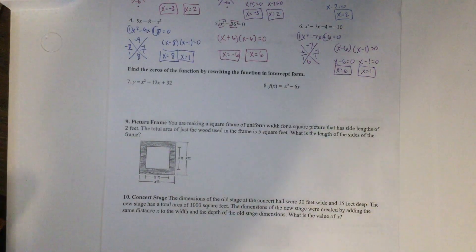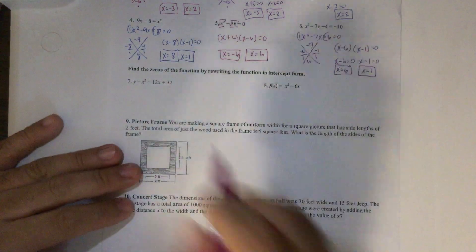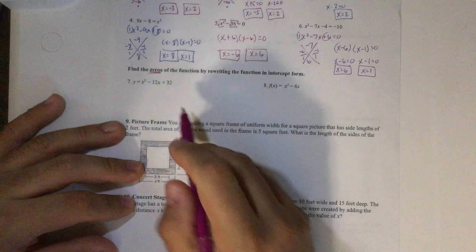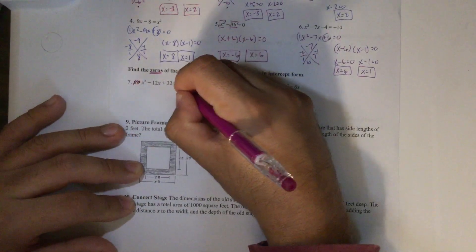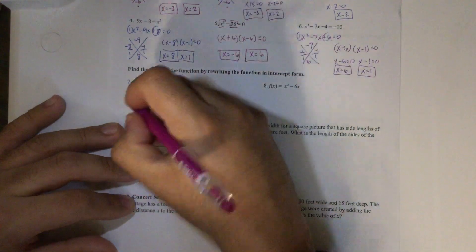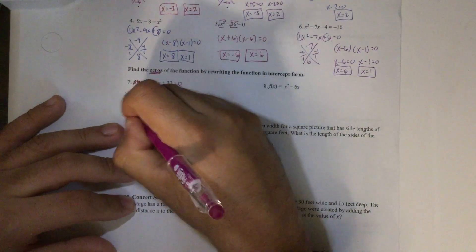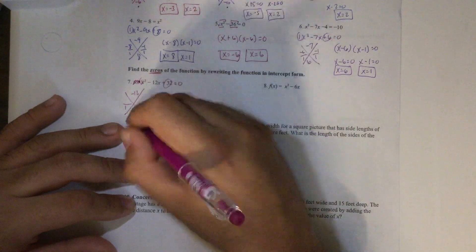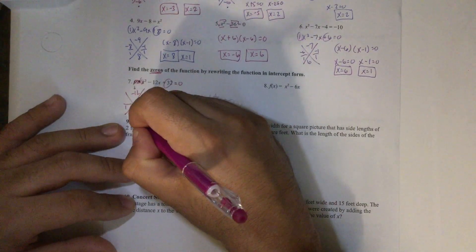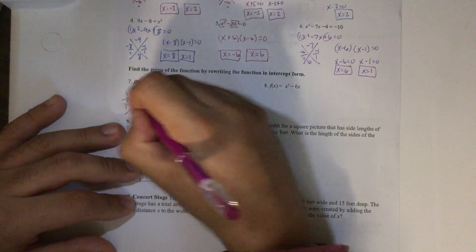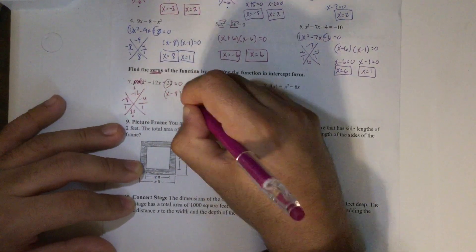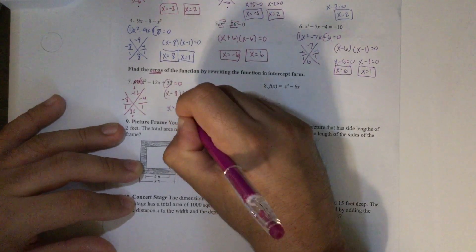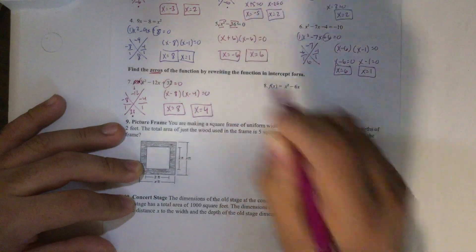Finding the zeros is the same thing as solving. So when it says find the zeros, that means to solve. First, set this equal to 0 and do the x method. So negative 12 on top, divide by a which is 1, and a times c is 32. My factors that add to negative 12 and multiply to 32 are negative 8 and negative 4. So x minus 8 and x minus 4 — set each equal to 0: x equals 8 and x equals 4.